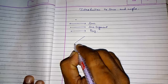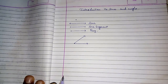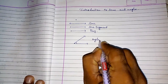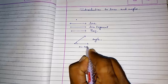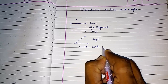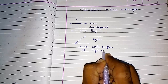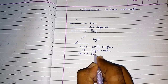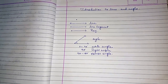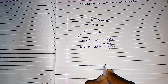Two rays together starting from the same point form an angle. If the angle is between 0 to 90 degrees, it is called an acute angle. If it is exactly 90 degrees, it is a right angle. If it is between 90 to 180 degrees, it is called an obtuse angle.